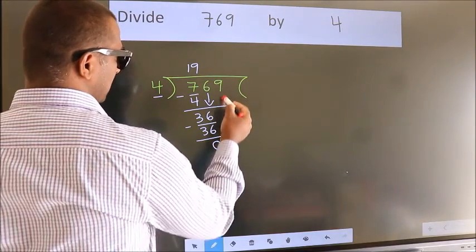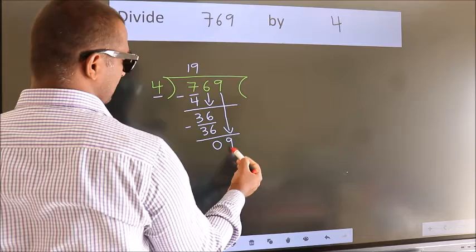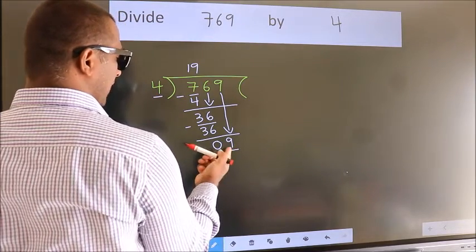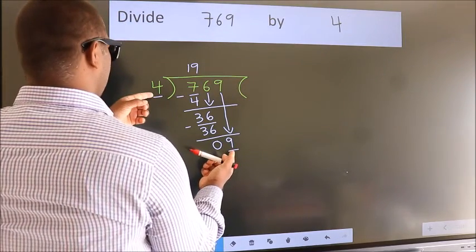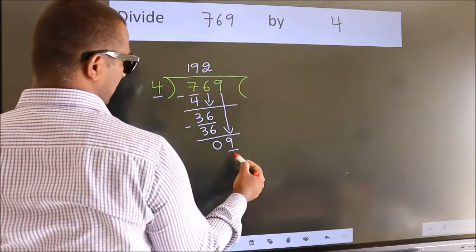After this, bring down the beside number. So, 9 down, giving us 9. A number close to 9 in the 4 table is 4 twos, which is 8.